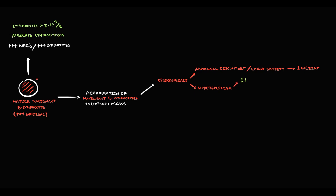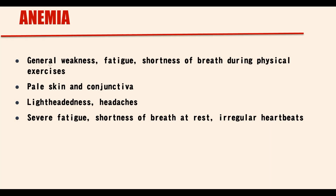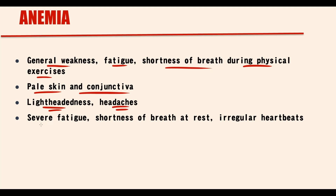Hypersplenism causes decreasing red blood cells and hemoglobin, resulting in anemia. Anemia manifests with weakness, fatigue, and shortness of breath during physical exercise. Patients with anemia will also have pale skin and conjunctiva. If anemia progresses, new symptoms begin to appear: lightheadedness, headaches, severe fatigue, shortness of breath even at rest, and irregular heartbeats.